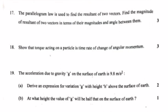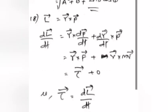Problem 18: Show that torque acting on a particle is time rate of change of angular momentum. Answer: L vector equals R vector into P vector. dL by dt equals R vector into dP by dt plus dR by dt into P, which equals R vector into F equals torque plus zero.